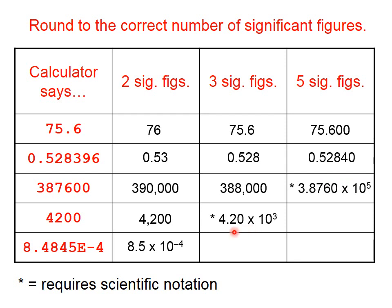The same thing has to happen right here. 4.20 times 10 to the third has three significant figures. Even though the number on our calculator only has two, if we need to round it to three, that's how we need to do it.